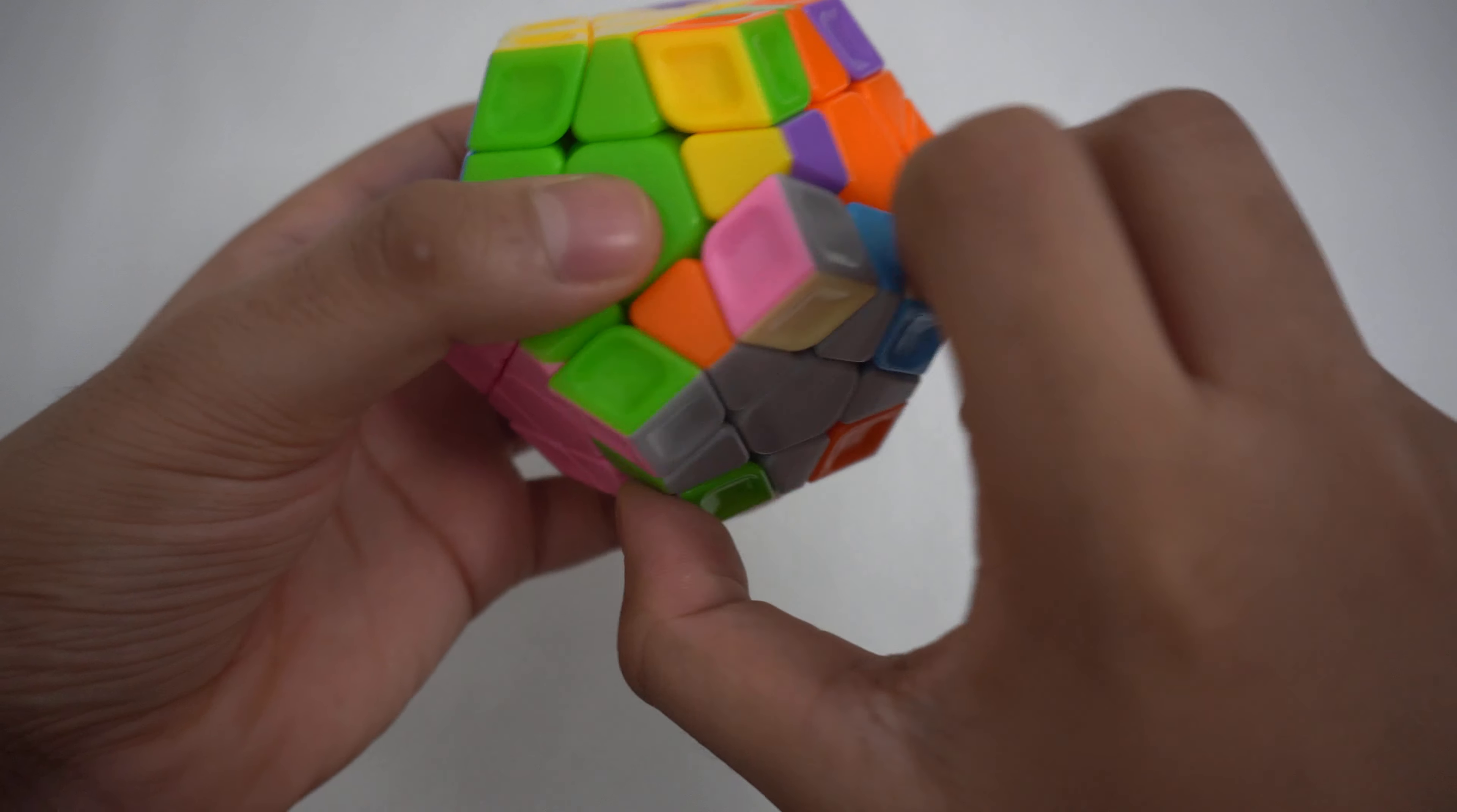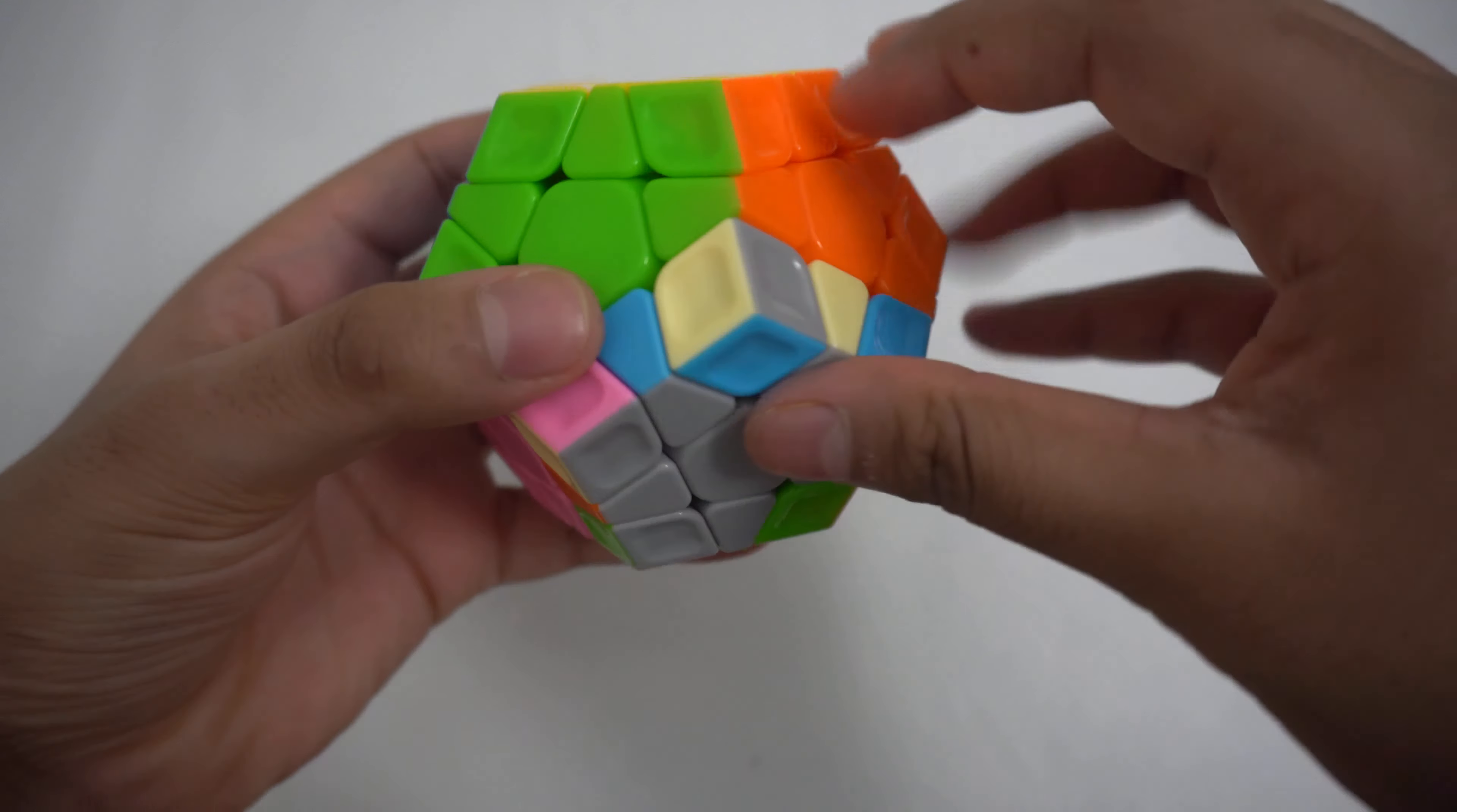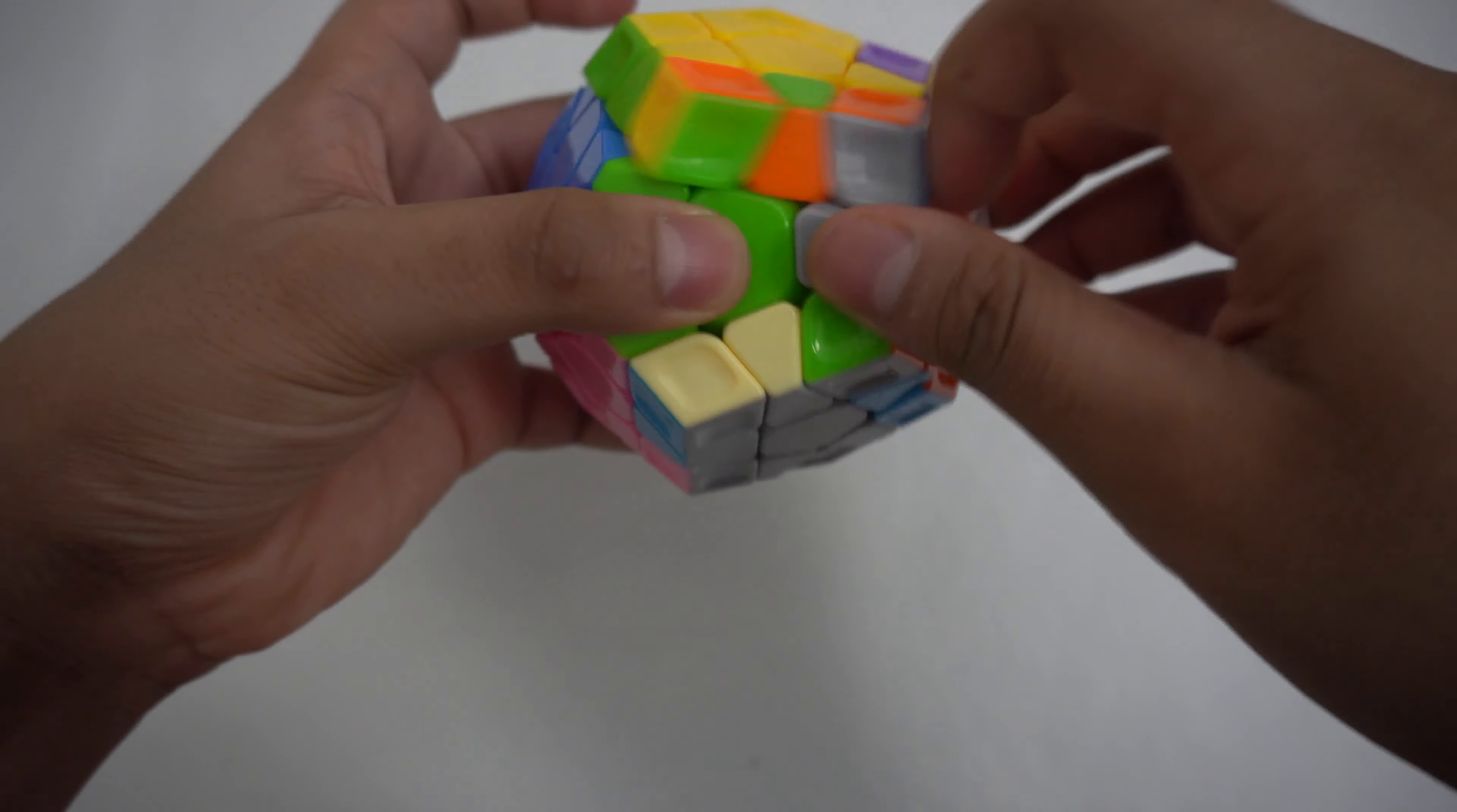After that, turn the bottom and only the bottom to the next edge that isn't oriented and do the same set of moves until the gray side goes to the bottom. Now do this with any remaining pieces that you have and you should have a fully solved gray side.